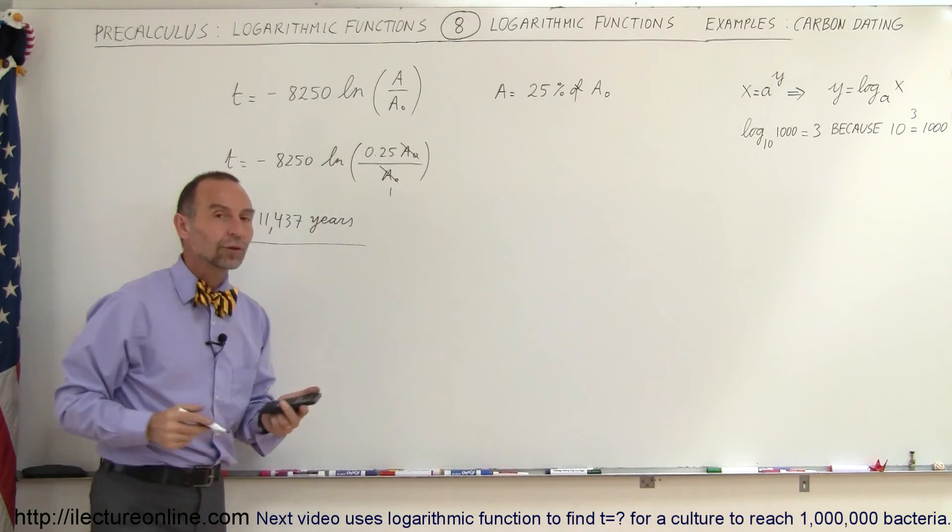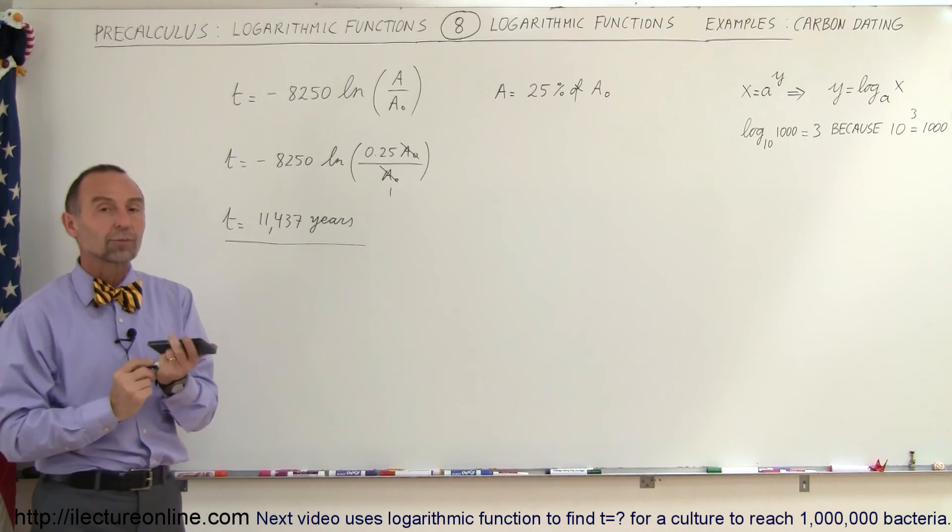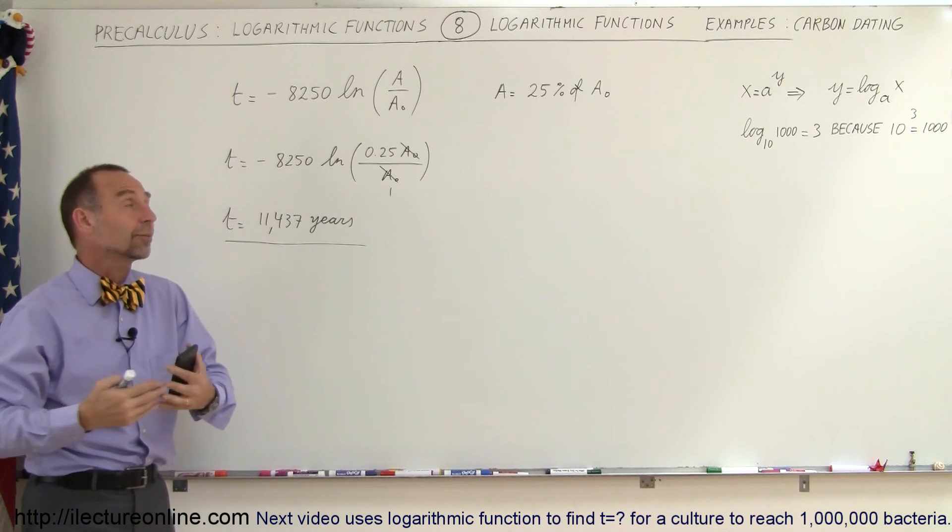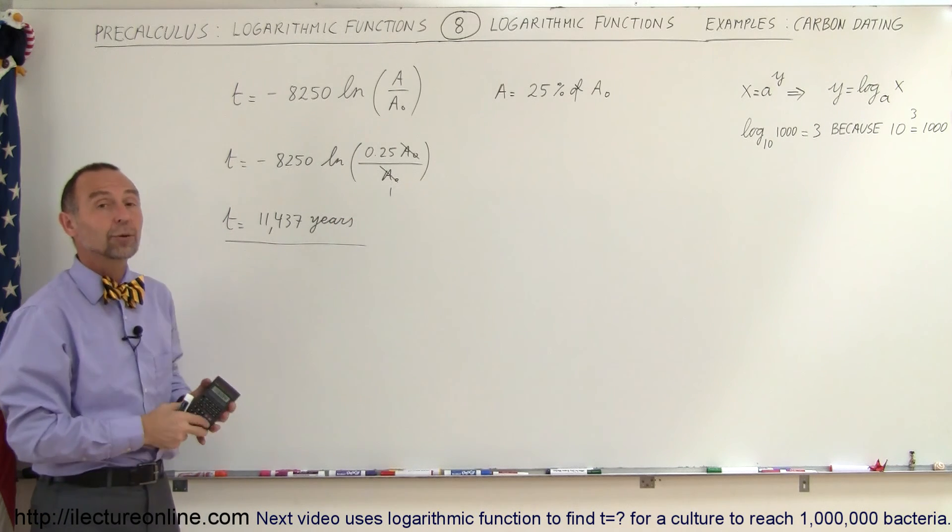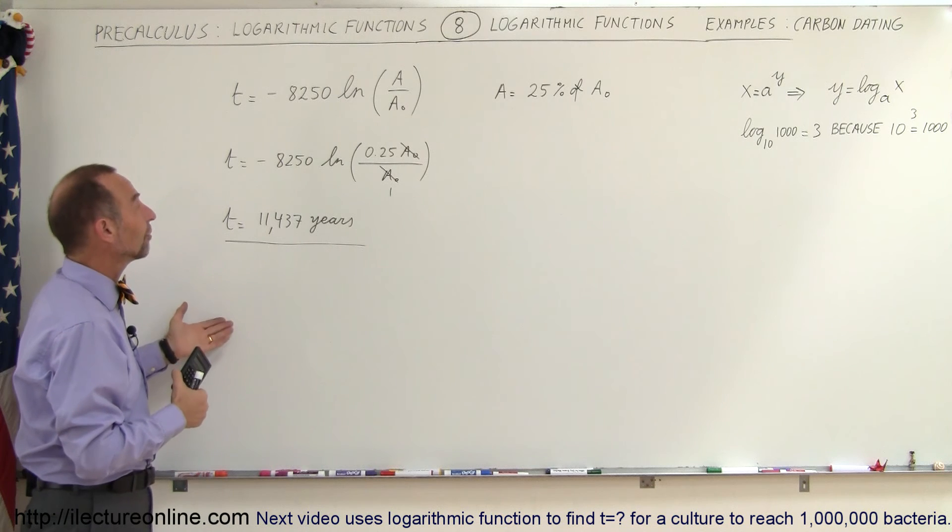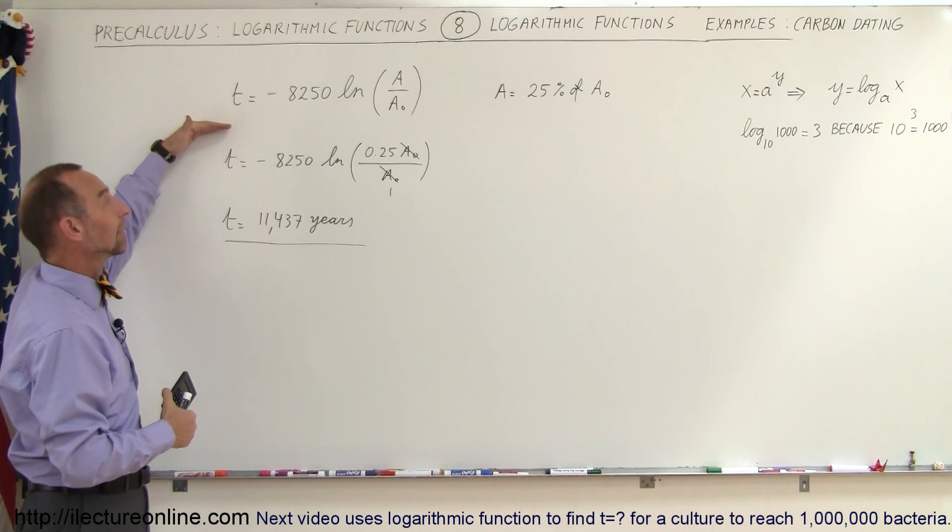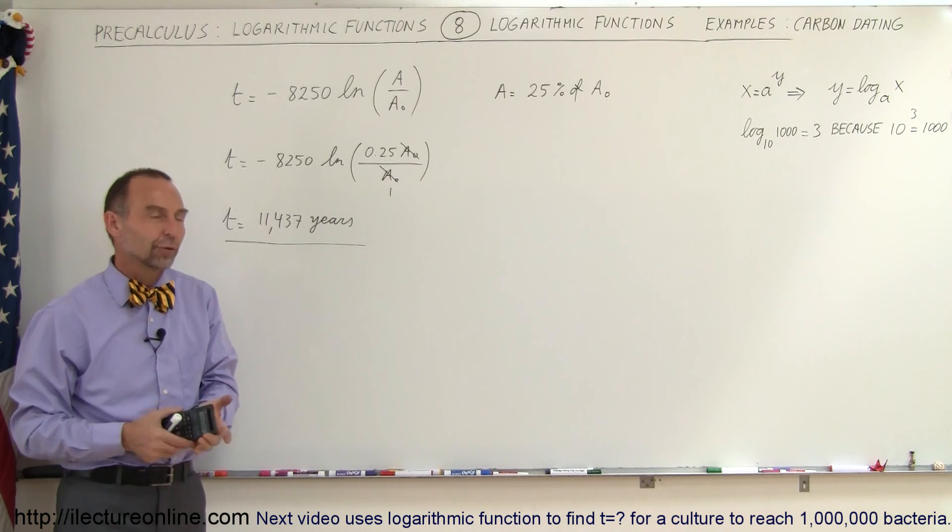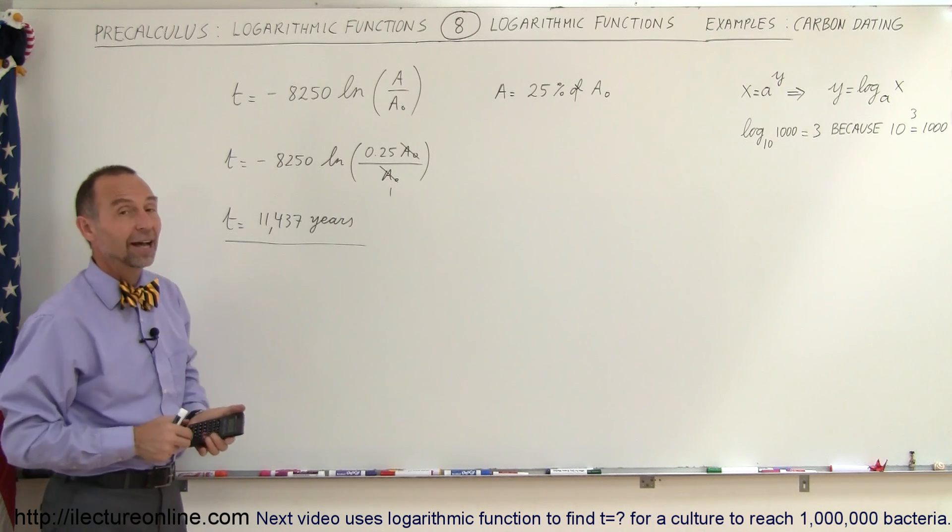Of course, in real life, there's all kinds of scientific uncertainty in the measurements and so forth, so there would be a plus or minus, but just for the sake of argument, just for the sake of applying this kind of equation, you can see that natural log functions have an interesting application, in this case, to find the age of an artifact using carbon-14 dating. And that's how that is done.